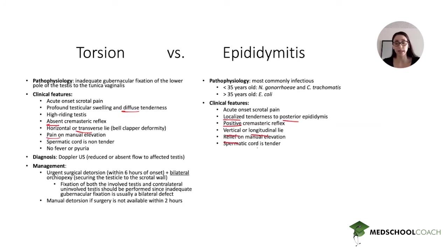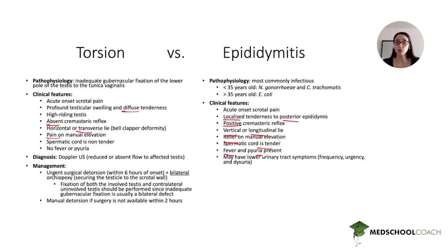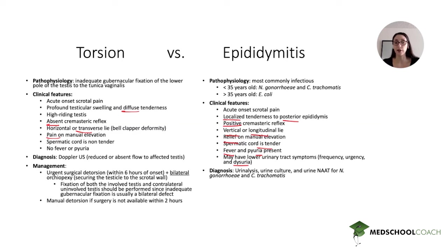With epididymitis, you get relief on manual elevation — the opposite of torsion where elevation worsens pain. The spermatic cord is quite tender, which is another differentiating feature. Sometimes you can get fever since this is an infection, and you will have pyuria — white blood cells in the urinalysis — and the urine culture should grow the causative organism. You may also have lower urinary tract symptoms like frequency, urgency, and dysuria. Urine studies include urinalysis, urine culture, and nucleic acid amplification tests for gonorrhea and chlamydia.